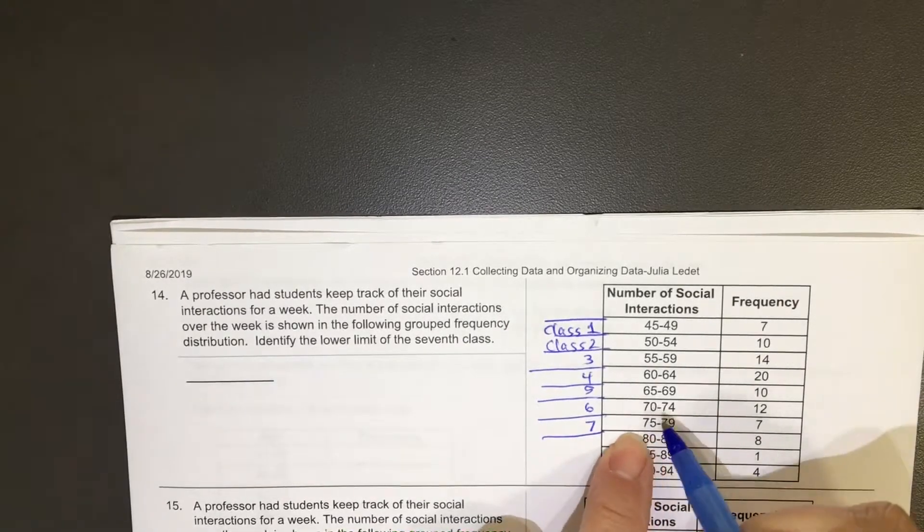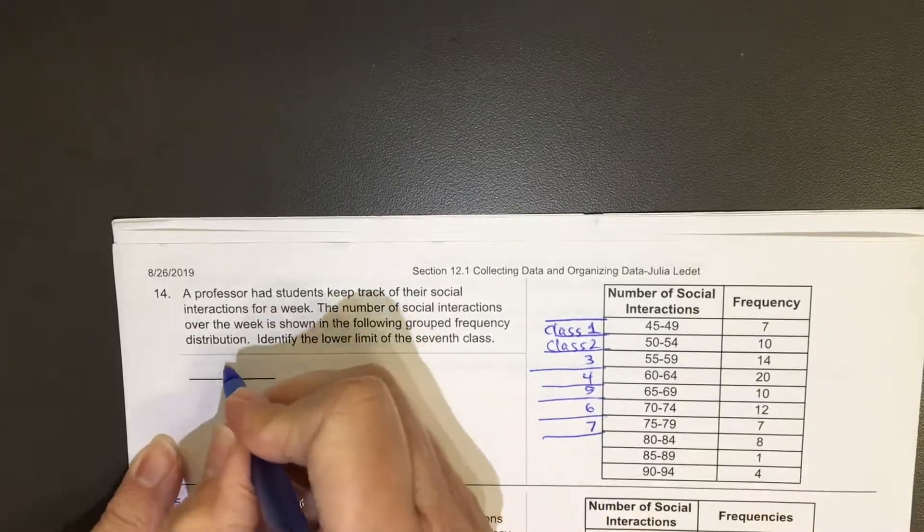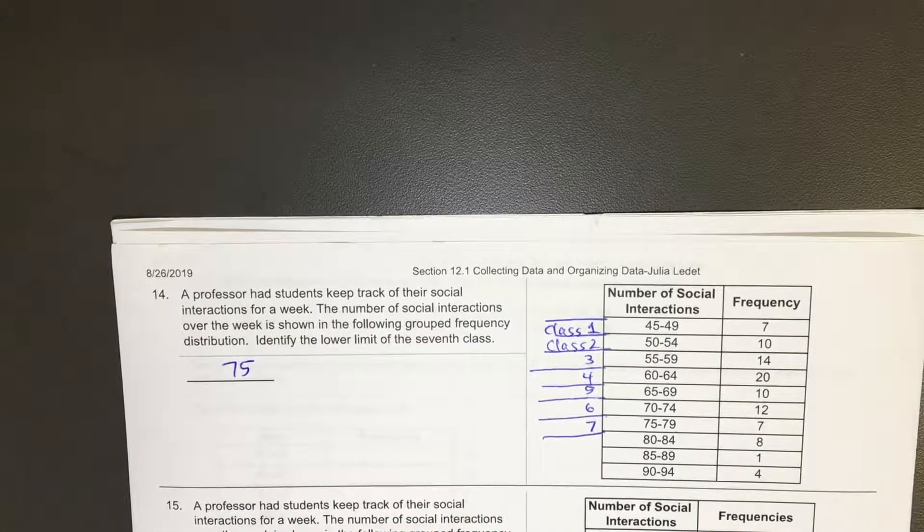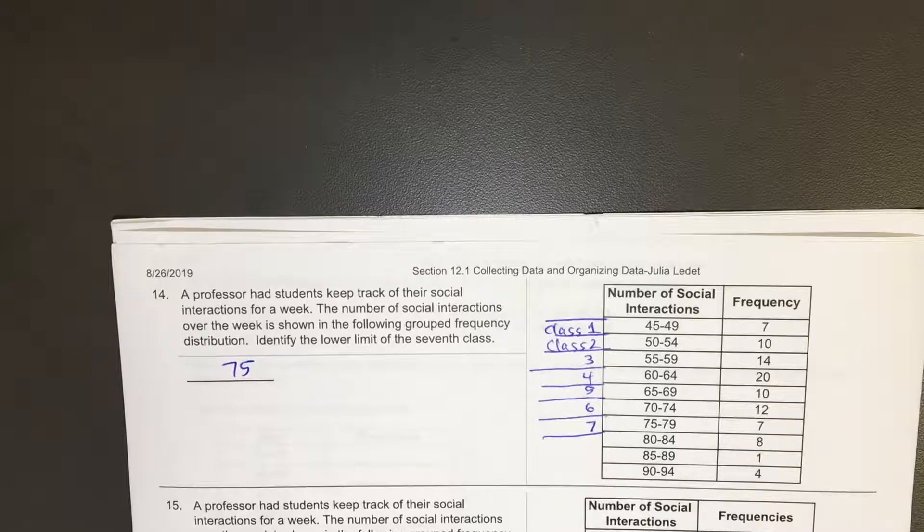Class seven is 75 to 79. The lower limit is 75. The smallest number that would put somebody in that class, 75.